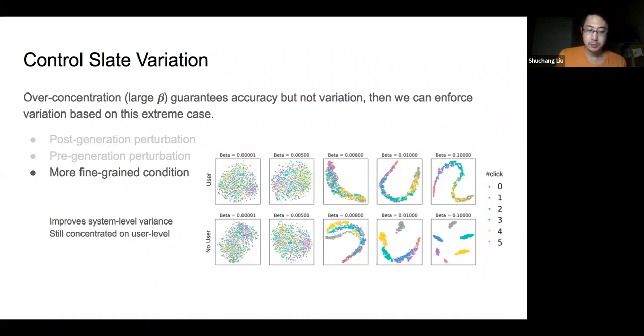Again, we observe the large beta case, which is the over-concentration extreme with high accuracy but low variance. We found that without user information, the encoding is clustered with respect to the desired number of clicks as the condition c. In contrast, including the user embedding into the condition would provide a more fine-grained slate encoding, slightly improving system-level variance, but the recommended slates are still concentrated given the same user.